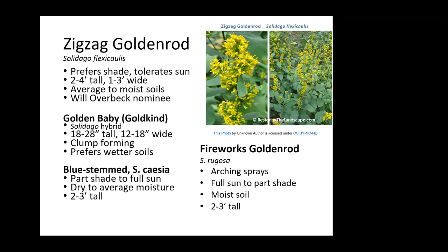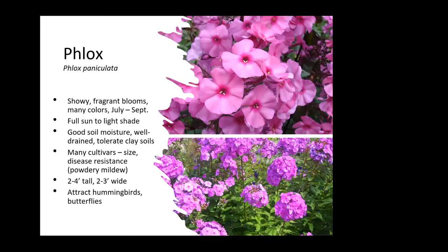Tall phlox is a pretty common plant that a lot of people use in their garden. Most people know how to grow it, but it is a native — and that's a good thing to know. It attracts hummingbirds and butterflies.